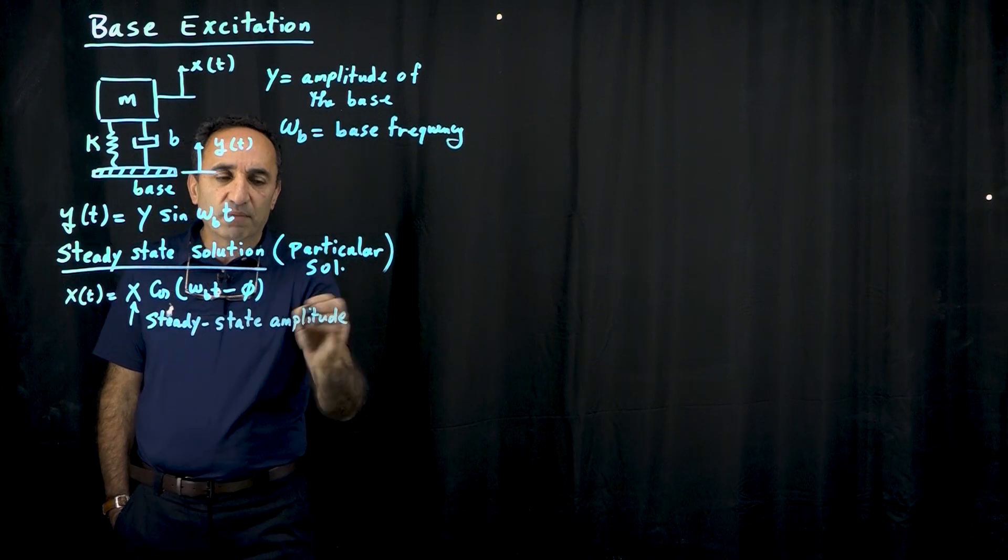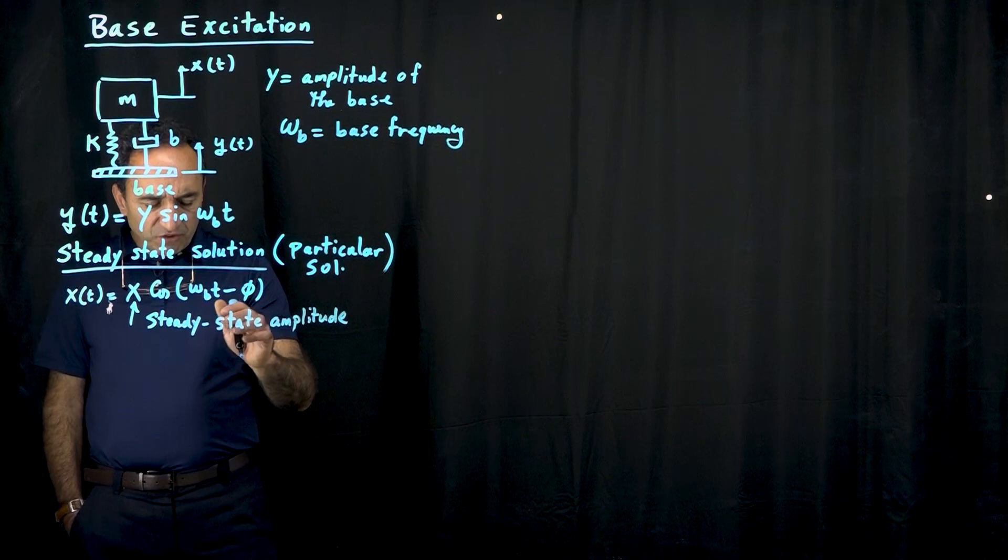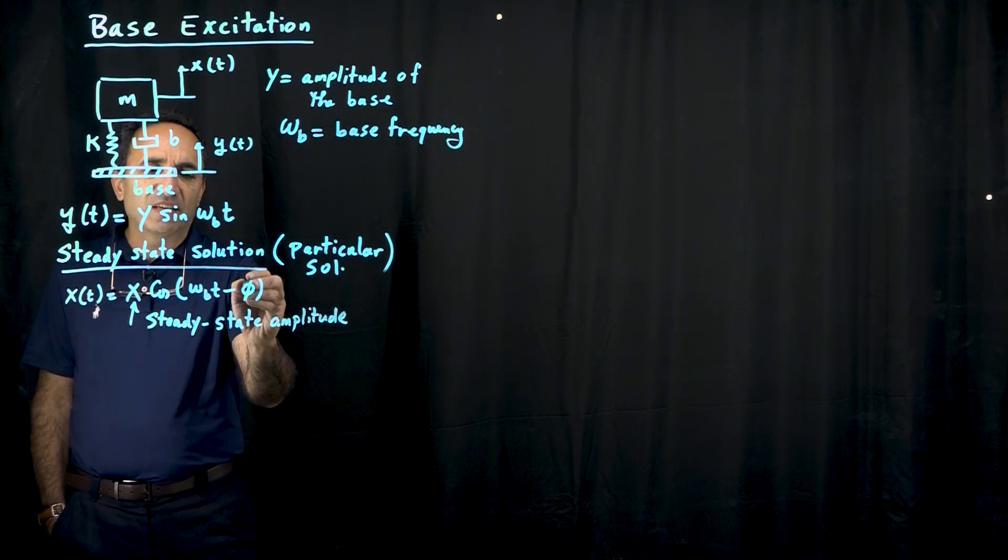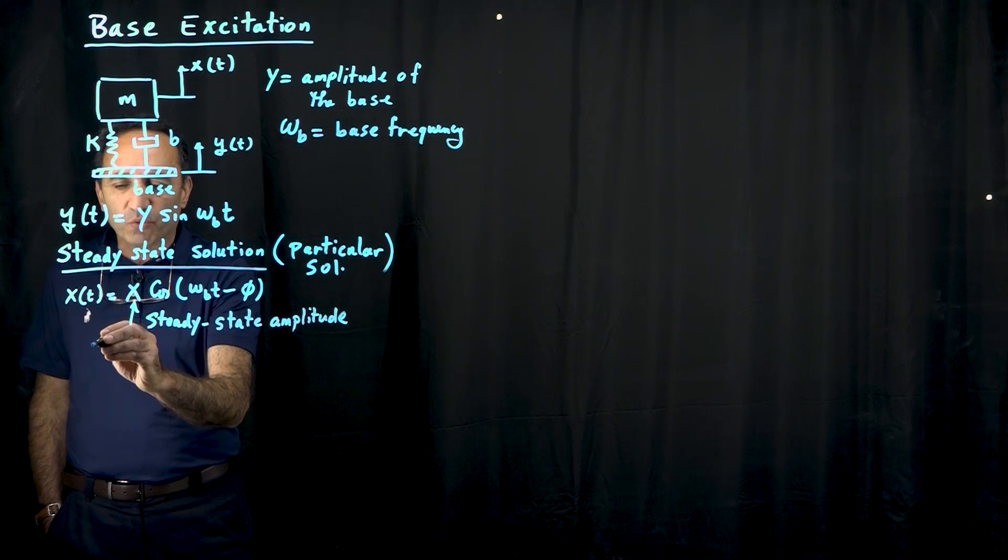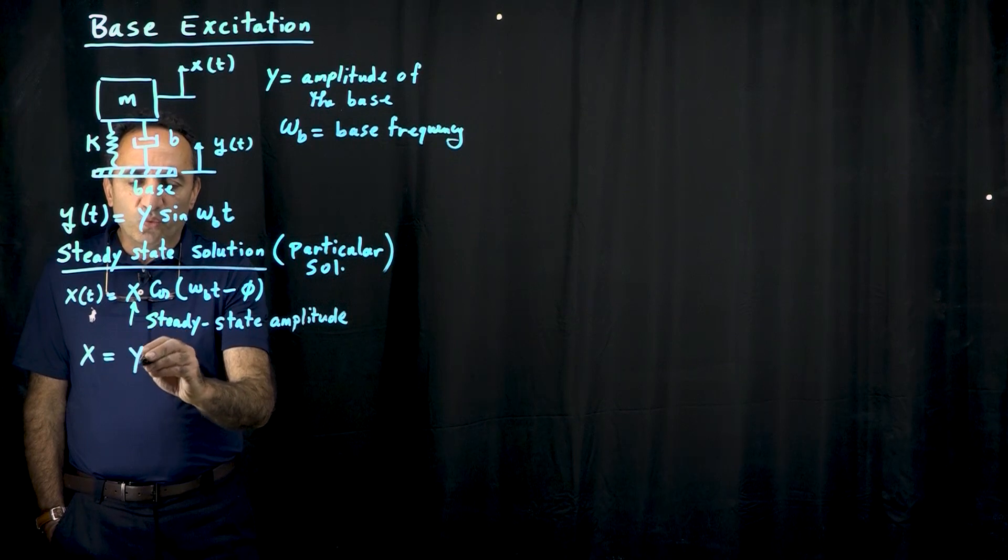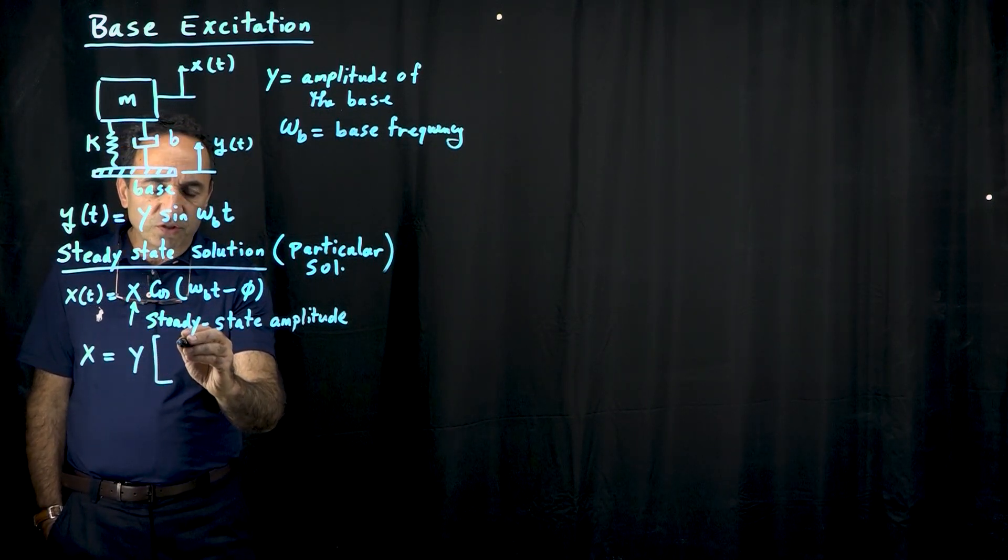And I'm going to show you an example, you know, do you see what that means. So it turns out that if you're looking for this steady state amplitude, and this is the phase angle, but the phase angle is not that important, even though it can be determined. So it turns out that x is equal to y times this expression, this bracket,